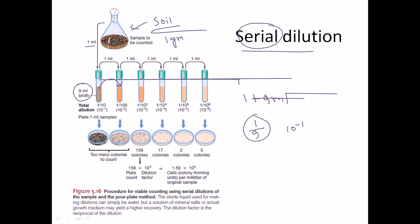We take one milliliter from this container and put it into the next one, making it 1 in 100, which is 10 to the power minus 2. Then we take one milliliter from that and put it into the next, making it 1 in 1000, or 10 to the power minus 3. We continue transferring one milliliter into each subsequent sterile nutrient broth container, diluting the bacterial load from 10⁻¹ all the way to 10⁻⁶.